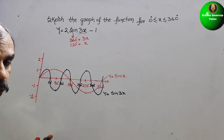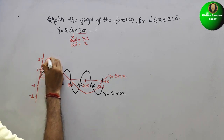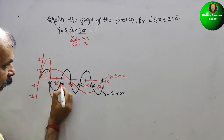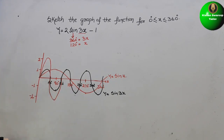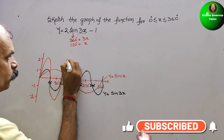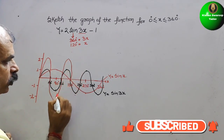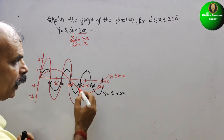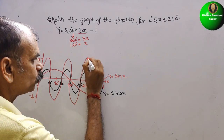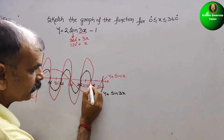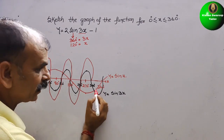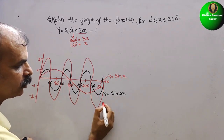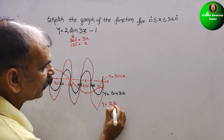Plotting y = 2sin(3x): it goes to 2 at 30°, back to 0 at 60°, down to minus 2 at 90°, returns to 0 at 120°. Then up to 2 at 150°, back to 0 at 180°, down to minus 2 at 210°, 0 at 240°, up to 2 at 270°, 0 at 300°, and ends at 0 at 360°.